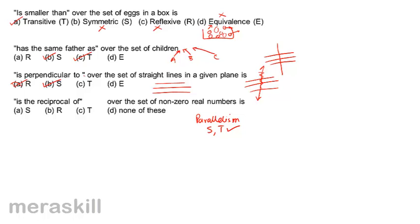To correct: in perpendicularity, if a line is perpendicular to a given line, those lines are also perpendicular — so perpendicularity is a case of symmetry. Consider 'is the reciprocal of': 2 is the reciprocal of 1/2 and 1/2 is the reciprocal of 2, so they are images and pre-images of each other — definitely symmetry. So: the first example (smaller than) is transitive; the second (same father) has symmetry and transitivity; the third (perpendicular) and fourth (reciprocal) are symmetry.